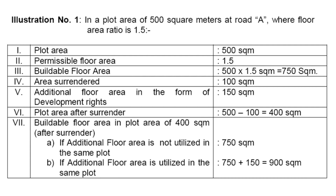For the 400 square meters of land remaining, you are eligible for 750 square meters of FSI only. With the TDR FSI, you can build an additional 150 square meters. So in total, you can build 900 square meters on the plot of 400 square meters.